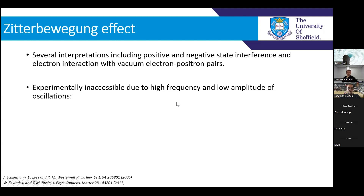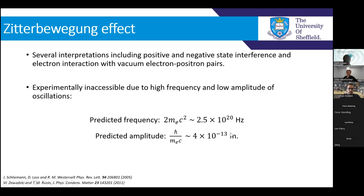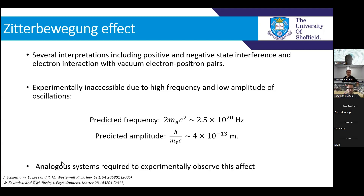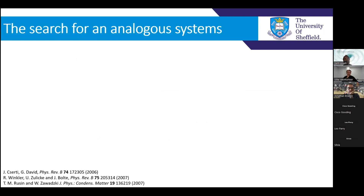It was all on paper, but there was never any expectation to be able to observe this, due to the high frequency and low amplitude of these oscillations. In the relativistic free electron case, we have a predicted frequency of 2.5 × 10²⁰ Hz and a predicted amplitude of 4 × 10⁻¹³ meters. That's not something we would ever hope to observe. But this led to the idea that there may be analogous systems in which we can observe this effect, which spurred on a search for them.